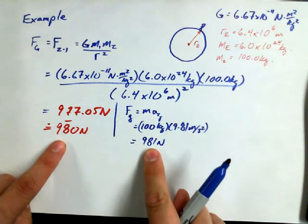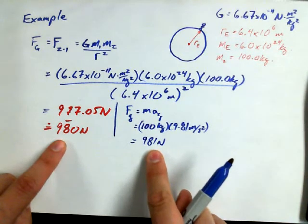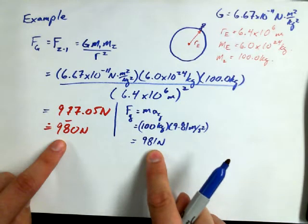981 newtons. Are we close? Yeah. Pretty close. Why is it different? What do you think the difference is?